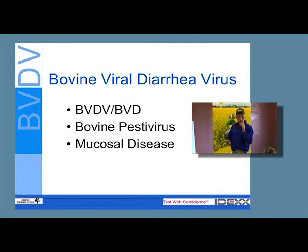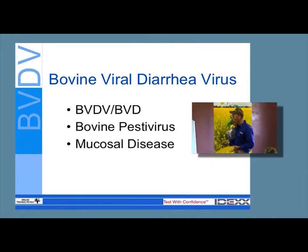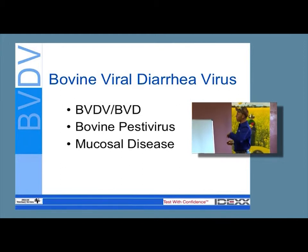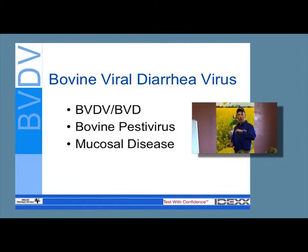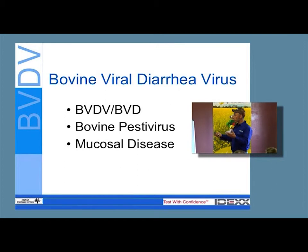The lips, gums, esophagus, abomasum, rumen, et cetera — they get ulcers all the way through, and they pretty much melt away in front of your eyes and die quite rapidly. That's called mucosal disease.